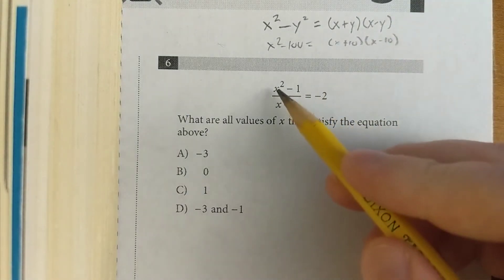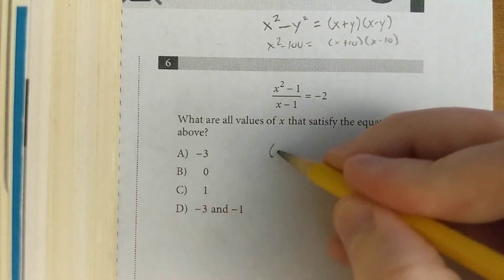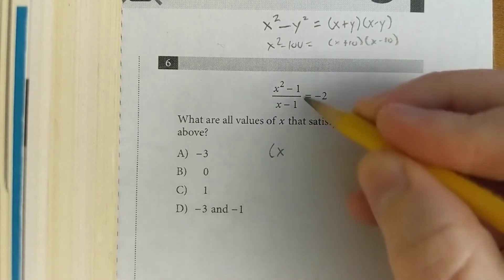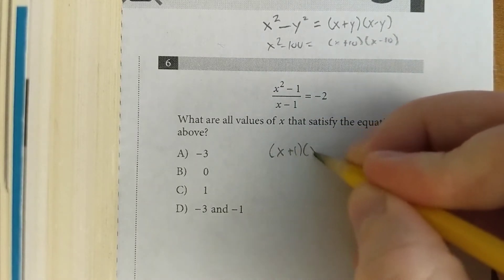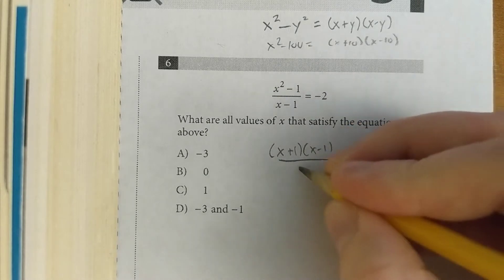In this question here, we've got x squared minus 1. Square root of x squared is x, square root of 1 is 1, so we can rewrite that as (x + 1)(x - 1).